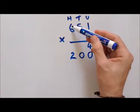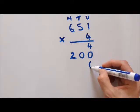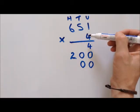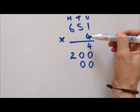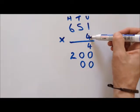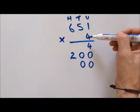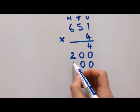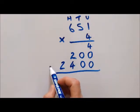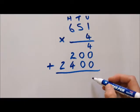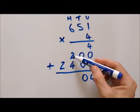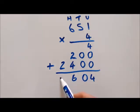Now we move on to the hundreds column, so it's going to be a multiple of a hundred — we put the zeros in. Four times six is twenty four. But it's a multiple of hundreds, so we put it as 2400. Now we add these up: four plus zero plus zero is four, zero plus zero is zero, two plus four is six, and then we've got the two on its own. The answer is 2604.